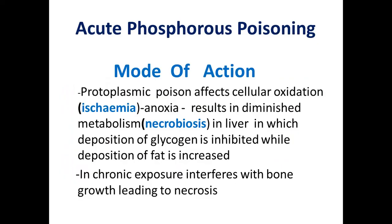Now, what is acute phosphorus poisoning? Mode of action: in acute phosphorus poisoning, it is a protoplasmic poison — that means it affects cellular oxidation, causing ischemia and anoxia, which results in diminished metabolism. This is called necrobiosis in the liver, in which deposition of glycogen is inhibited while deposition of fat is increased. In chronic exposure, it interferes with bone growth leading to necrosis.